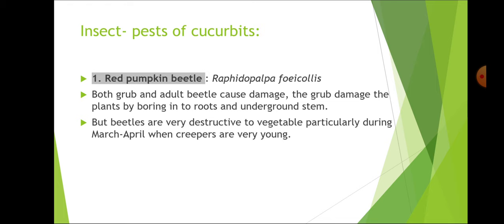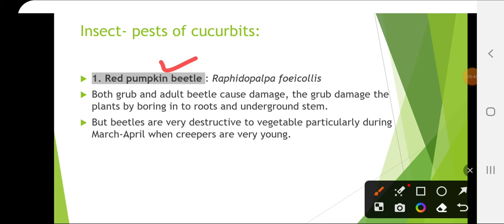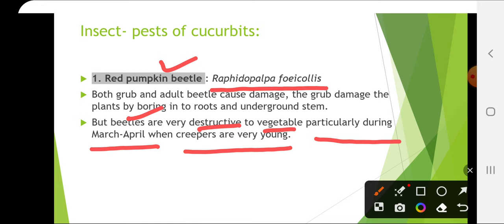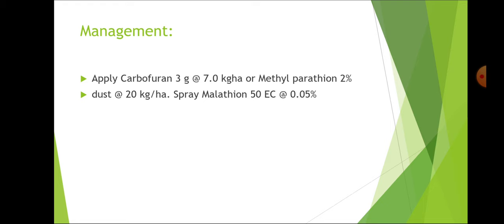The insect pests of cucurbits: the first is Red Pumpkin Beetle, scientific name Raphidopalpa foveicollis. Both the grub and adult beetle cause damage. The grub damages plants by boring into roots and underground stem, affecting yield. The beetle is destructive to young vegetative growth, particularly during March-April. Management includes applying Carbofuran 3G at 7 kg per hectare or Methyl Parathion 2% dust at 20 kg per hectare.